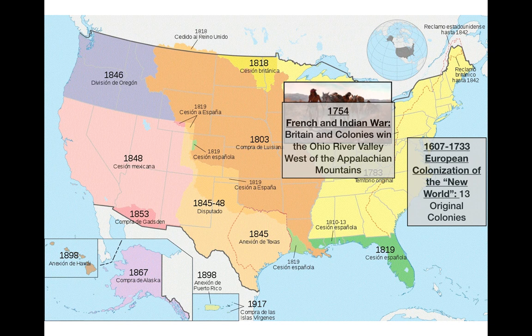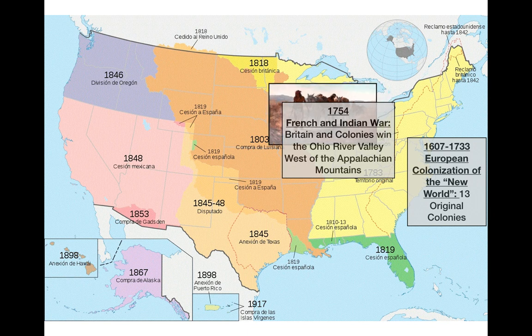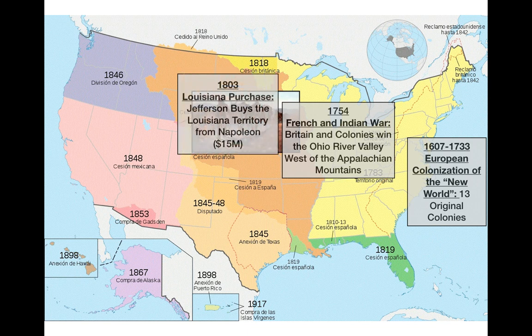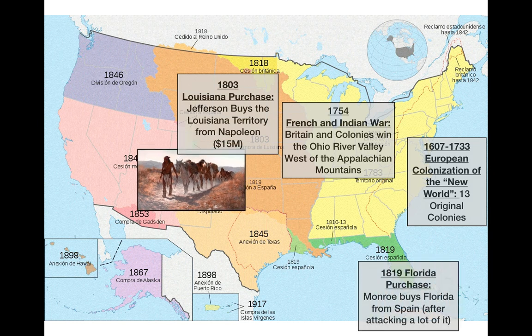This ultimately ends with the French and Indian War, where the British and the colonies worked together against the French and the Indians to win the Ohio River Valley, west of the Appalachian Mountains. The British drew the Proclamation Line after the French and Indian War, basically saying do not expand and leave the natives alone. But ultimately that didn't happen, and westward expansion did continue, especially after the Louisiana Purchase with Jefferson, where he buys the Louisiana Territory from Napoleon for 15 million. Then Monroe buys Florida from Spain.